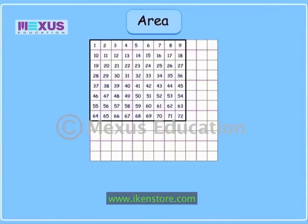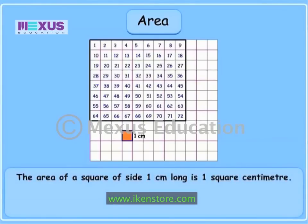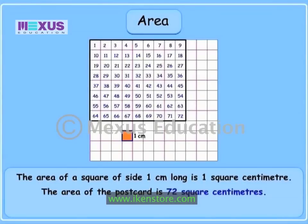Yes, but you are forgetting one thing. Remember, I had told you earlier that each square on this grid has a side of one centimeter — it is a standard unit to measure length. Now listen carefully: the area of a square of side one centimeter is one square centimeter. And because seventy-two such squares can cover this postcard, we say that the area of the postcard is seventy-two square centimeters.